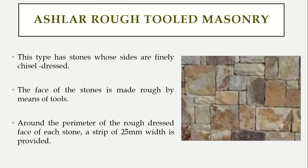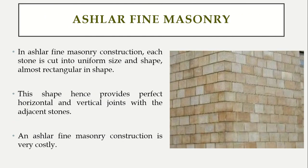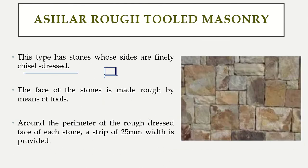Next is ashlar rough tool masonry. In this type, the sides of the stones are finely chiseled — the sides are shaped properly with the help of a chisel. However, the face of the stone is made rough by means of tools, so unlike ashlar fine masonry where the face is fine, here the face is a little bit rough.